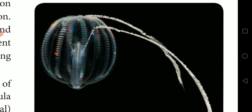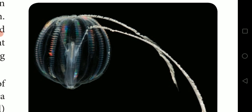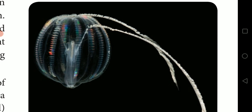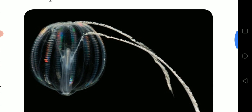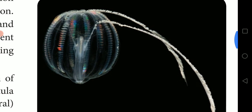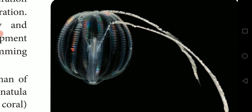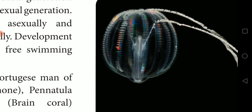Ctenophores lack nematocysts but possess special cells called lasso cells or colloblasts, which help in food capture. Digestion is both extracellular and intracellular. Sexes are not separate — they are monoecious. They reproduce only by sexual means; fertilization is external, and development includes a larval stage called cydippid larva.